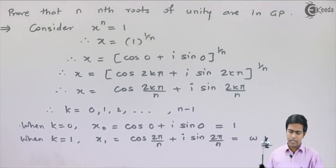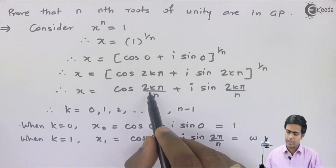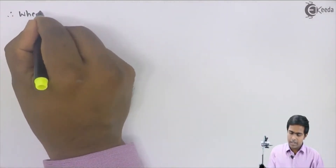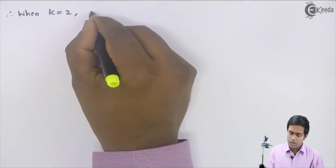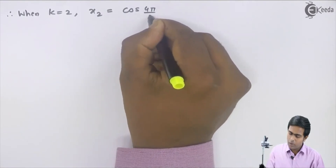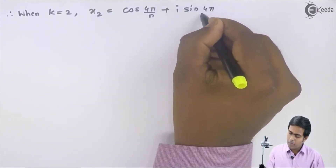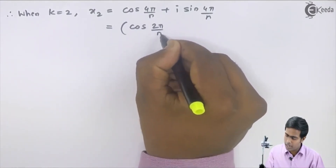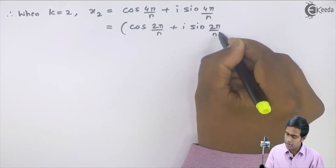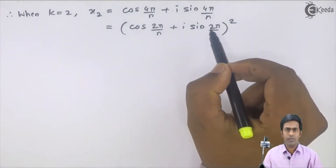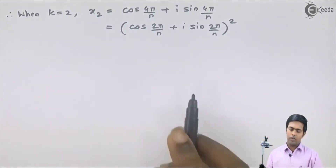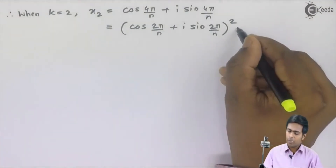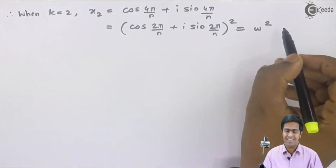For k = 2, substituting gives 2 × 2 = 4 in the numerator, so x₂ = cos(4π/n) + i·sin(4π/n). We can represent this in terms of ω: it becomes (cos(2π/n) + i·sin(2π/n))², using De Moivre's theorem with exponent 2 taken out. Since the bracket equals ω, this gives x₂ = ω².